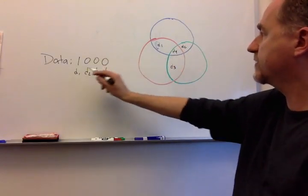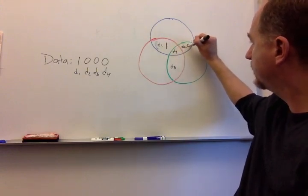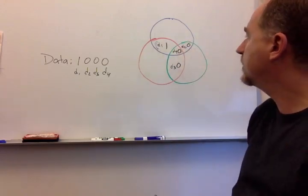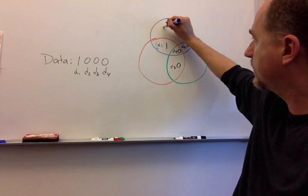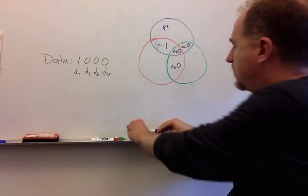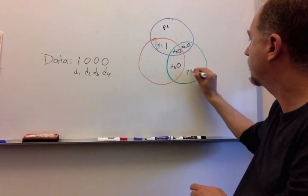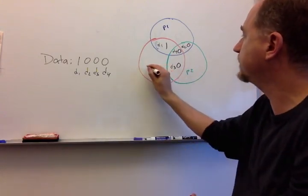I'm going to copy the values in here. So data one is a one, data two is a zero, data three is a zero, data four is a zero. Now I'm going to have parity bit one, parity bit two, and parity bit three in the circles.